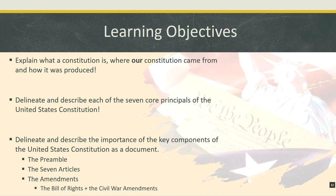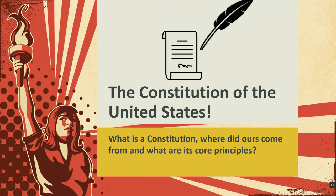We will close by delineating and describing the importance of the key components of the Constitution as a document — the preamble, the seven articles, and the amendments. We'll divide the seven articles and the amendments into separate subgroups. In the amendments, we'll focus in particular on the first ten amendments, the Bill of Rights, and the Civil War amendments. Let's start with that first learning objective: what constitutions are in general terms, and then narrow the scope to look at our constitution.